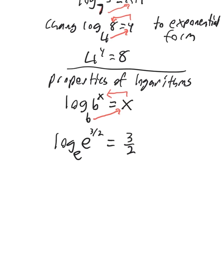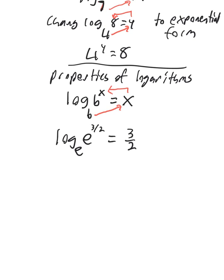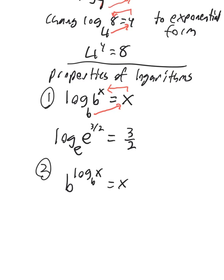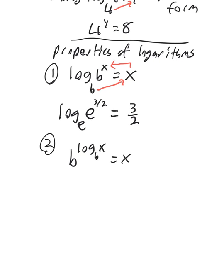Now, one that looks a little stranger. If we call that property 1, a second property would be b to the log base b of x will also equal x. So for example, if you had 5 to the log base 5 of y. Again, the bases have to be the same. 5 in this case, that's going to be y.